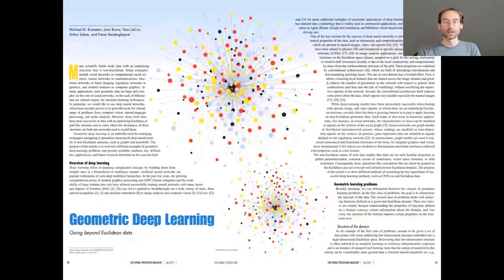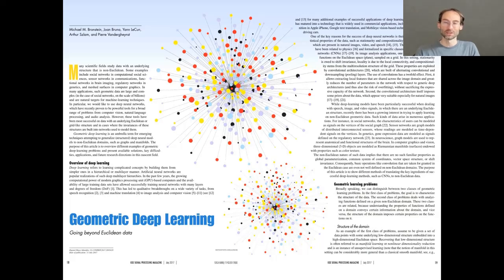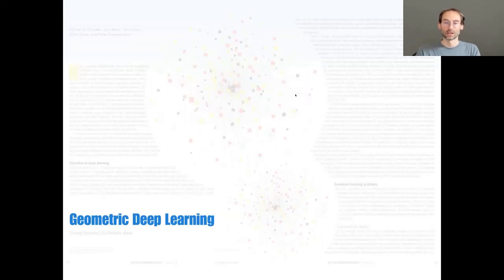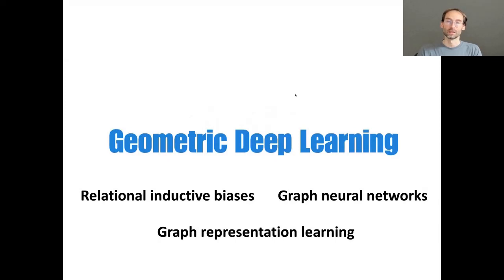What we call geometric deep learning — actually the term comes from when I was writing the proposal for my ERC consolidator grant back around 2015, interested in generalizing deep learning to geometric data with some form of geometric biases. We then wrote a paper with Joan Bruna, Jan Lecun, Arthur Szlam, and Pierre Vandergheynst, bringing together disparate works and calling the result geometric deep learning. You may also encounter terms such as relational inductive biases, graph representation learning, or graph neural networks, which is a particular implementation of these ideas.